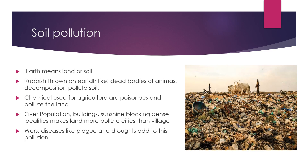We will discuss different kinds of pollution in detail, starting with soil pollution. Earth means land or soil. The rubbish thrown on earth, dead bodies of animals, dampness, stagnant air, decomposition, etc. make the soil polluted. Insecticides used today for agriculture are poisonous. Overpopulation, mechanization of industries, tall buildings, and sunshine-blocking dense localities make the land in cities more polluted than in the villages.